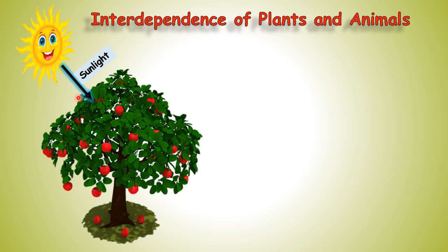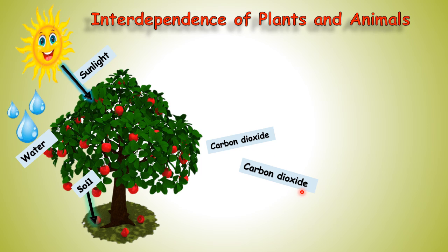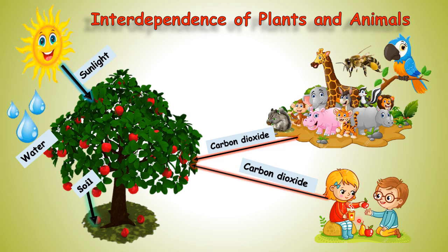Plants need energy, and that energy they get from sunlight. From soil, they get water. And they get carbon dioxide from animals. Remember, in science, when we say animals, humans come in the animals category only — humans are sophisticated animals. Animals breathe in oxygen and breathe out carbon dioxide. That carbon dioxide is used by plants for making food.